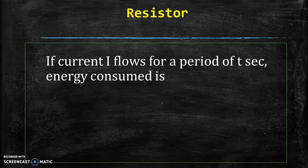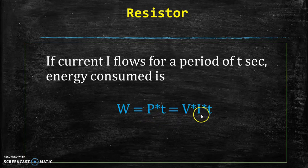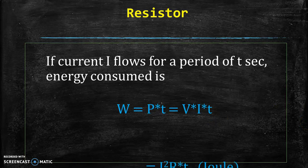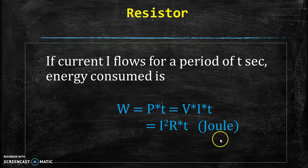If current I flows for a period of T seconds, then energy consumed W can be given as power multiplied by time. So P multiplied by T, where P is power and T is time in seconds. If we substitute the value of P as V multiplied by I multiplied by time T, it gives the total energy consumed. Substituting V multiplied by I as I squared R, the equation of energy consumed becomes I squared R T, with the unit of energy in joules.